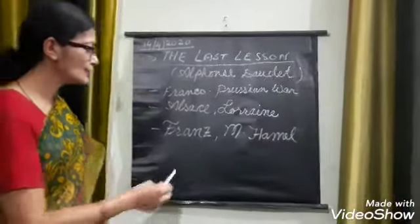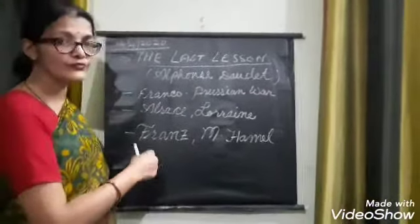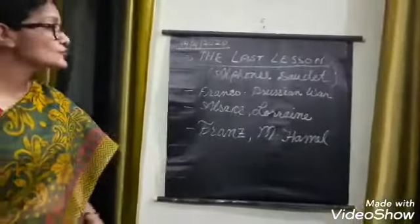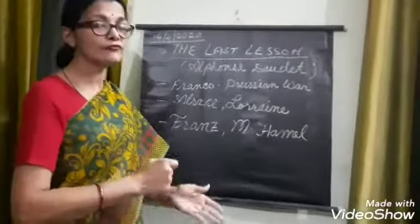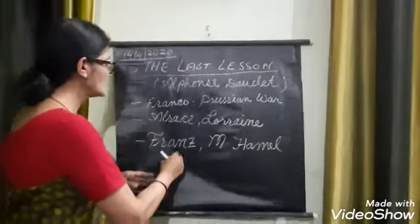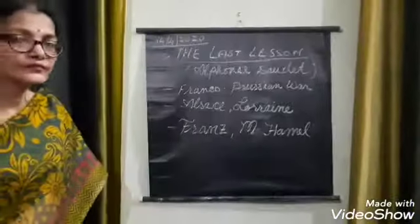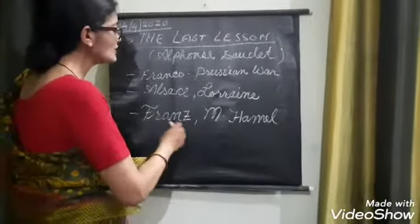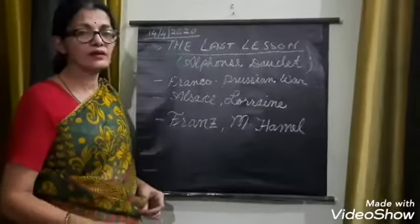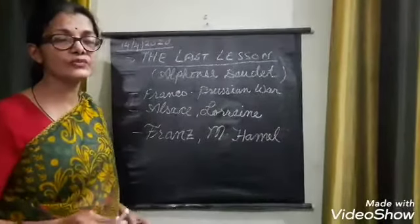Here we have two main characters in this story — a little boy named Franz and his teacher, M. Hamel. The story is written in first person and narrated in the language of Franz's perspective. Franz is a little boy and, like any other day, he was reluctant to go to school because he was getting late.